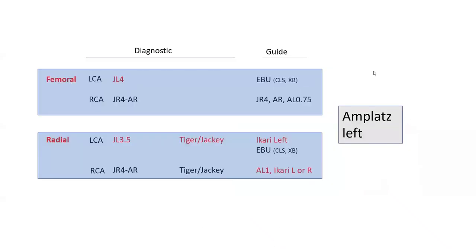For all procedures — radial or femoral, left or right coronary — remember Amplatz left is a great catheter, diagnostic or interventional, in all cases when you get in trouble. It provides the most support. Amplatz left can be used for left or right coronary from all accesses. Whenever you're stuck, whether native coronaries or grafts, think the next step could be Amplatz left.